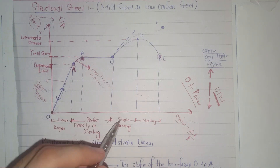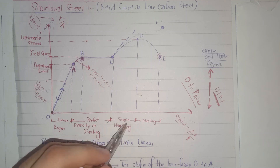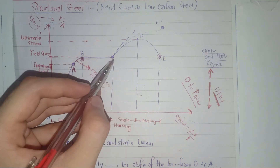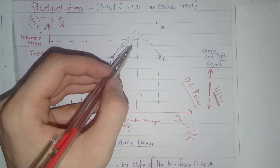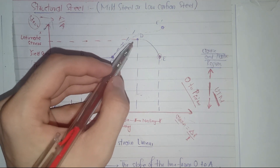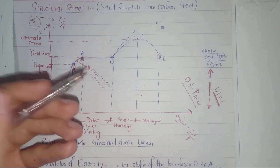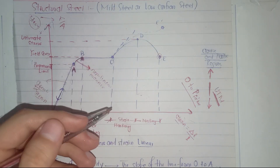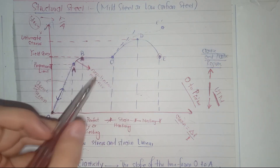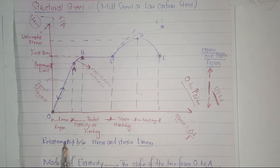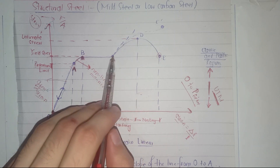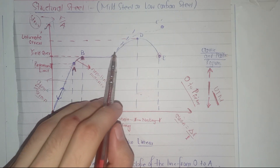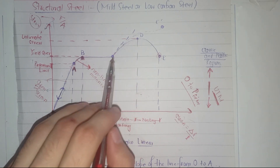After point C, strain hardening occurs. The material is getting stronger due to crystalline changes in the structure, and it provides more resistance to deformation. From C to D, there is a significant increase in the slope of the stress-strain curve, which also indicates that the material is getting stronger.